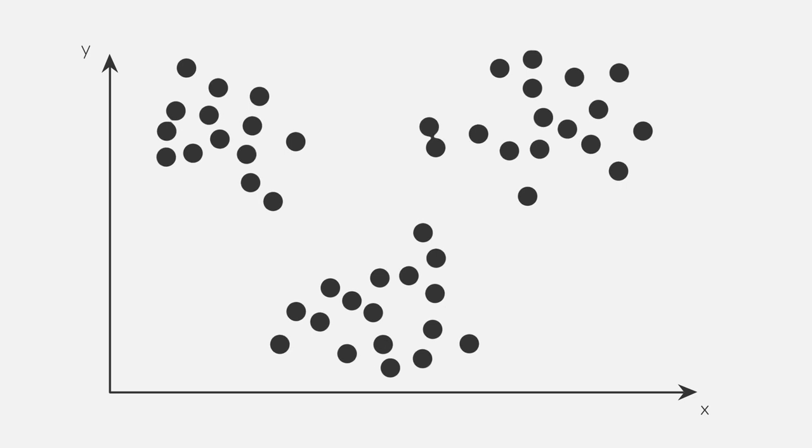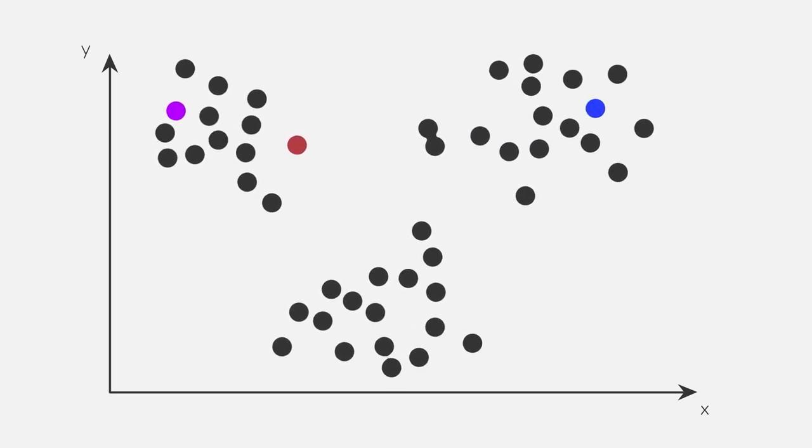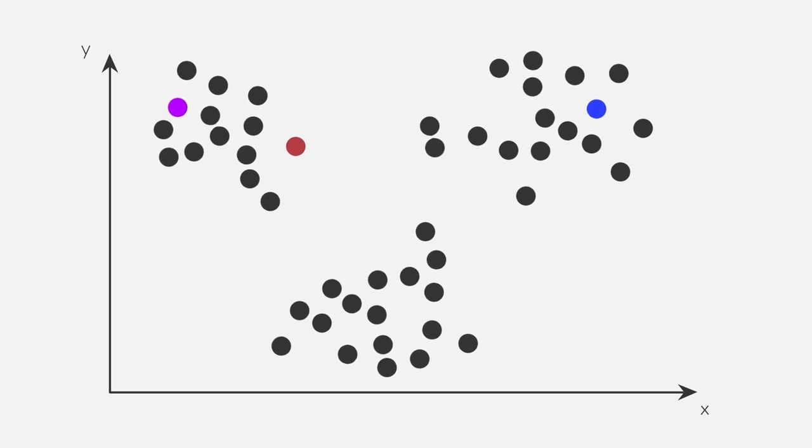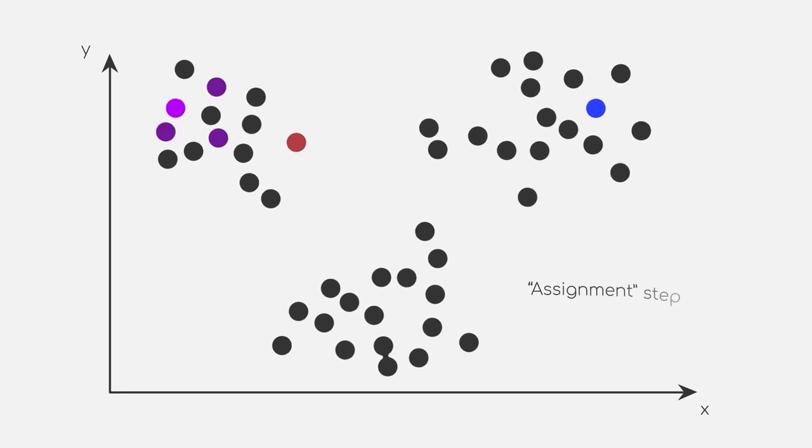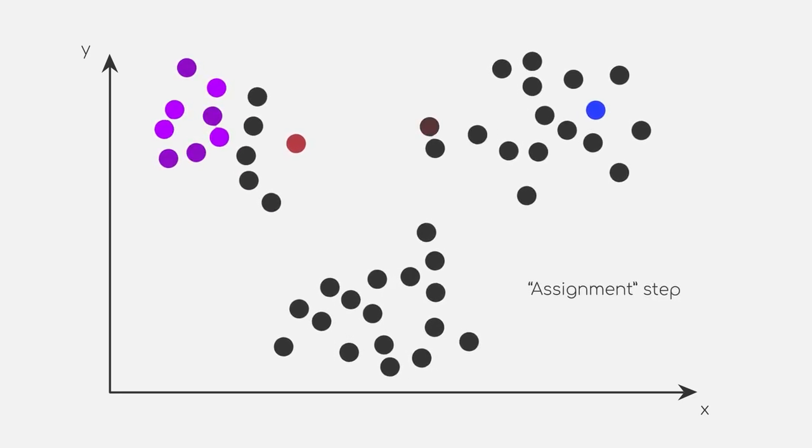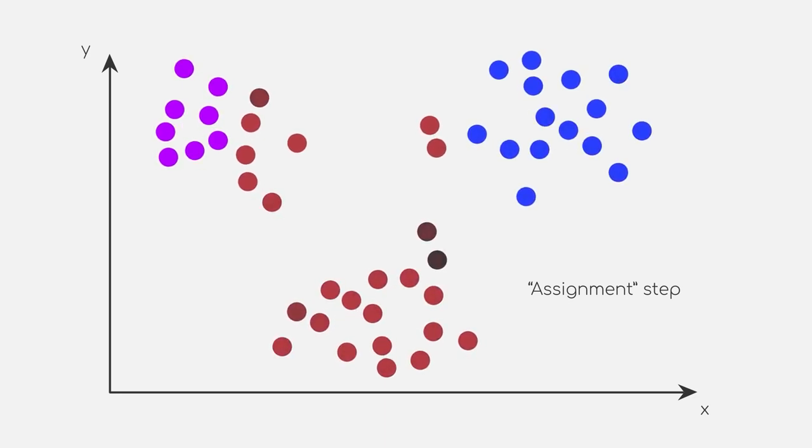We start by choosing some initial mean values, which can be done by picking three data points at random. We also color each of the mean points differently to show that they represent different clusters. Now we assign each data point to the closest mean point and color them accordingly. And voila, we have our first clustering.